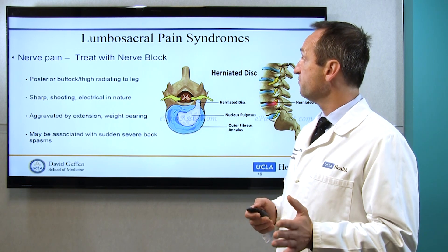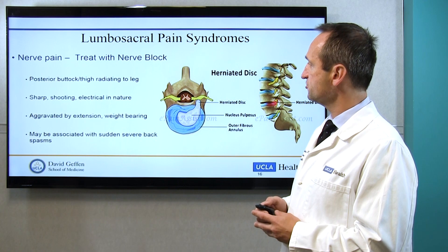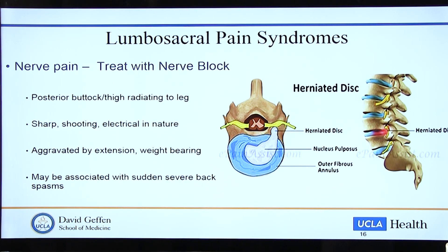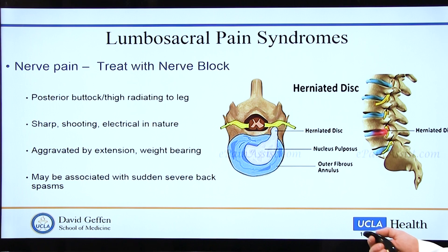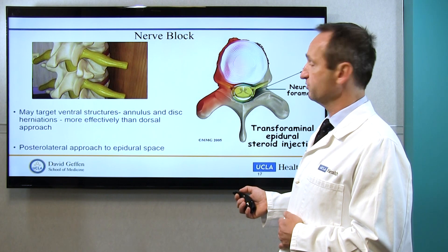Another condition is lumbar sacral pain syndrome because of nerve pain, and we treat that with a so-called nerve block — very similar approach, very similar medications, but the symptomatology is a little bit different. Patients come with complaints of posterior buttock or thigh pain — the dermatomal pain coming from the back down the side of the leg, back of the leg. By taking that history, we can clearly identify which nerve it is. The pain is described as sharp, shooting, electrical in nature. It is nerve pain aggravated by extension and weight bearing — standing for a long time or twisting shoots the pain down to the buttocks and leg. It may be associated with sudden severe back spasms. Most of the time the cause is a herniated disc — it ruptures the ring which holds it together, comes out, and presses on these nerves.